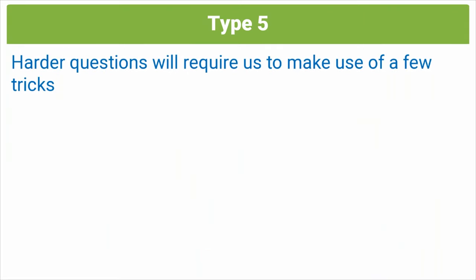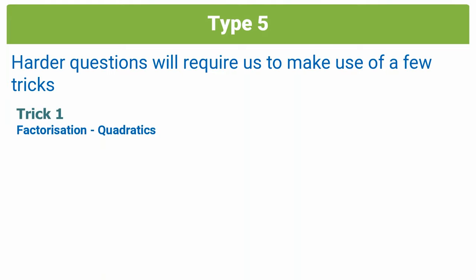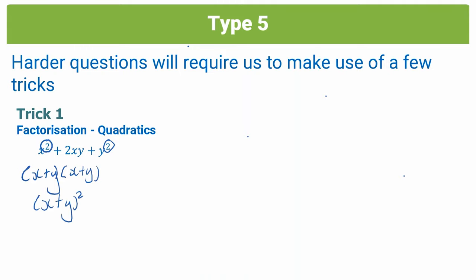However, in type 5 questions, the questions you get might not be as easy as that one. You might get some harder questions, and these will require us to make use of a few tricks. The first trick is factorization. If you have some quadratic terms — bringing up something from algebra: x squared plus 2xy plus y squared — this could easily be factorized as x plus y, all squared. You could also get x squared plus x minus 12, which factorizes as x plus 4 into x minus 3.